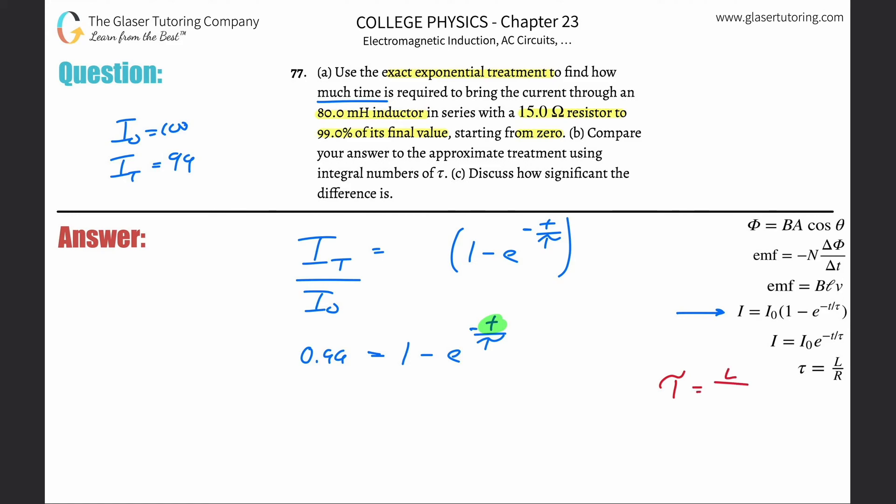The time constant here is going to be the inductance divided by the resistance—just the formula. Simply take the inductance of 80 millihenries, but we need that in henries, so take that and multiply it by 10 to the minus 3. The resistance here was 15 ohms; we don't have to do anything to that.